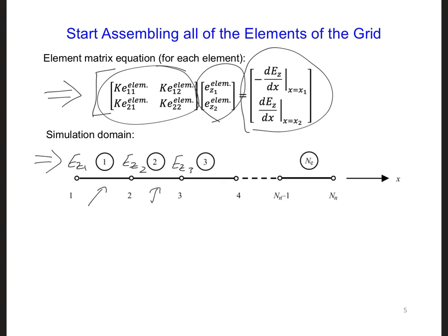As mentioned last time, what we'll end up with is a global matrix equation that will allow us to solve for the unknown EZ at each node of the grid. So we're going to have this K coefficient matrix, an EZ array with all the EZ values at the nodes of the grid, equal to a right-hand side B array. In order to build this global matrix equation, which includes all the elements of the grid, we need to assemble all of these element equations together after they are applied to each element. To see how this global assembly works, let's write out the element equations for the first two elements of the grid.